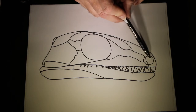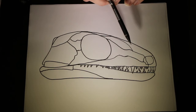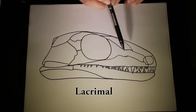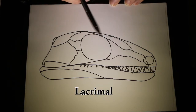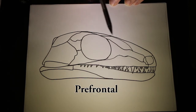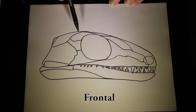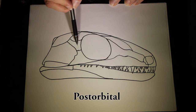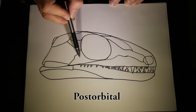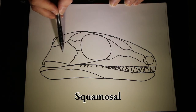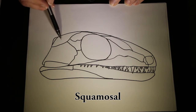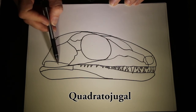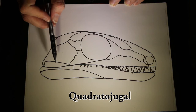We have an opening here — this is the nares for the nasal opening. Above this we have the nasal bone, the lacrimal bone which is usually bordered by the orbit, the prefrontal, the frontal bone, the postfrontal — so pre and post frontal — a postorbital that's behind the orbit, and then the cheekbone which is called the jugal, the squamosal, the parietal, the supratemporal on the very top, and then down in the corner near the jaw joint we have the quadrojugal.